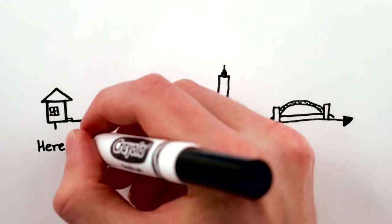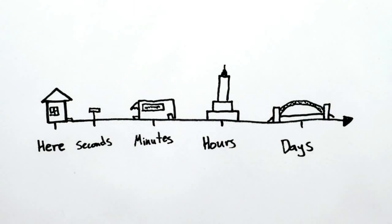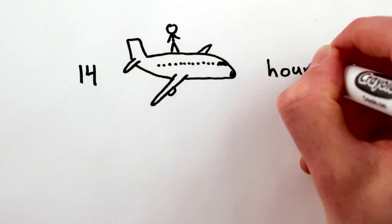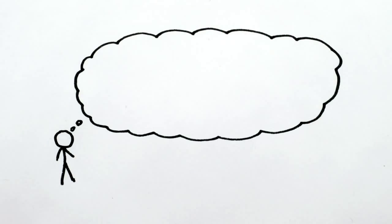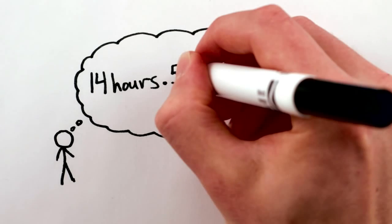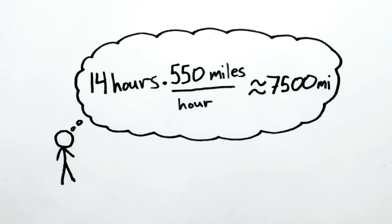In fact, using time to measure distances is so useful that I only know the distance from LA to Sydney in plane hours, not miles or kilometers. Though I suppose I could figure it out by multiplying 14 plane hours by the 550 miles per hour speed of a plane to get roughly 7,500 miles.